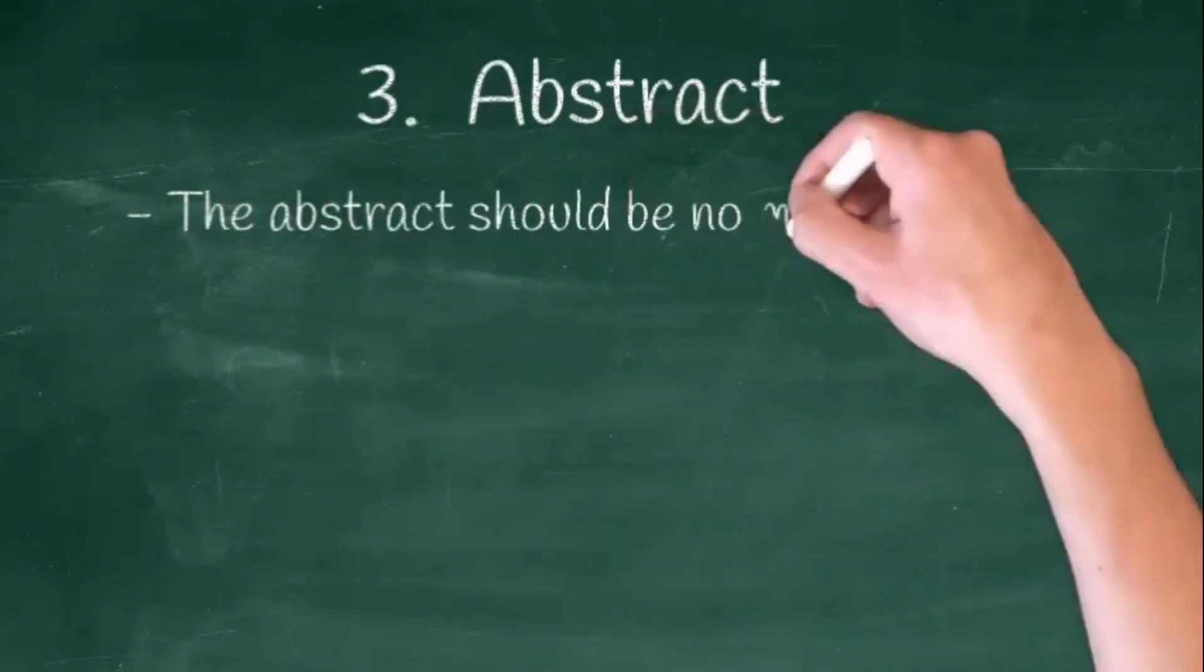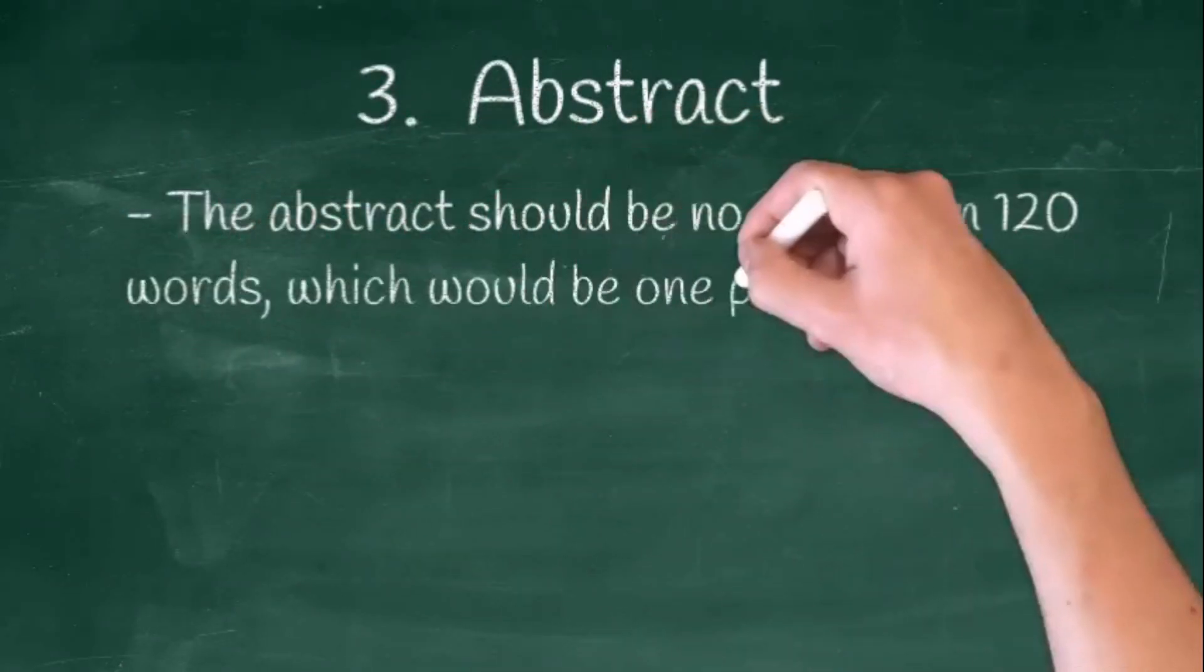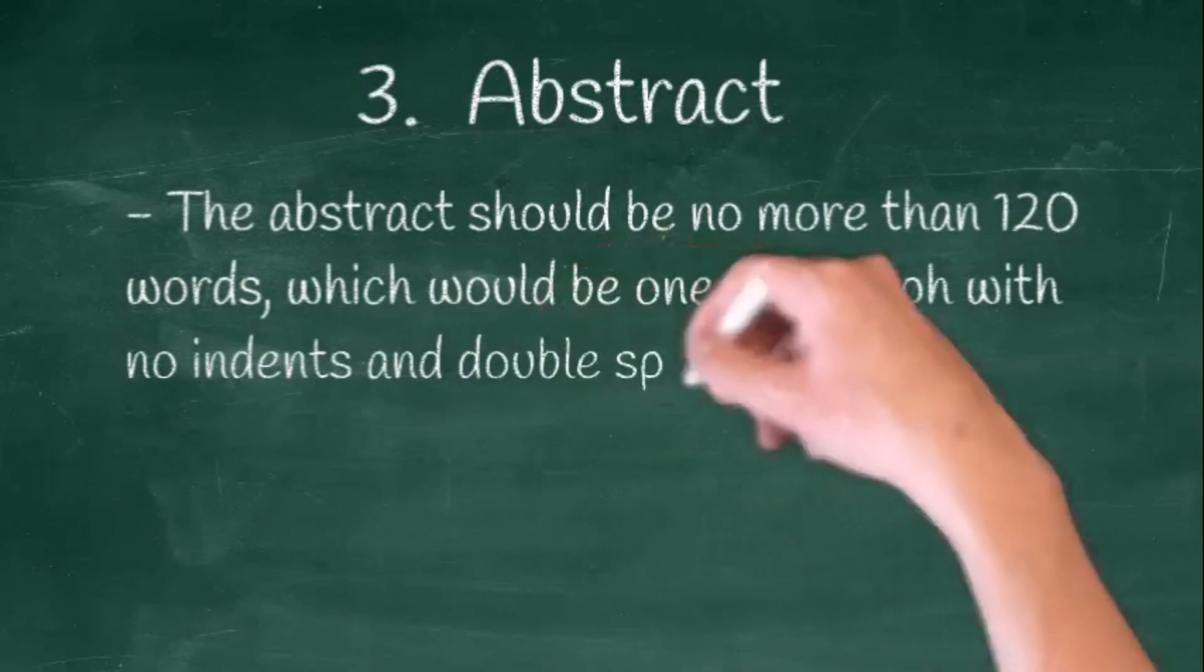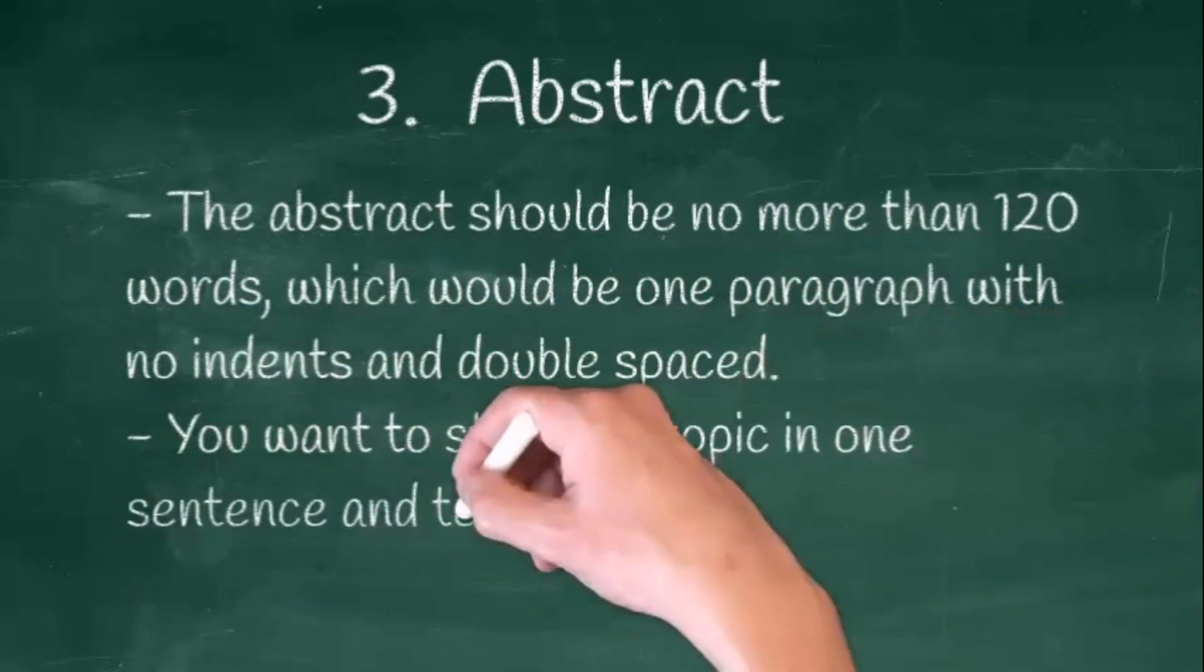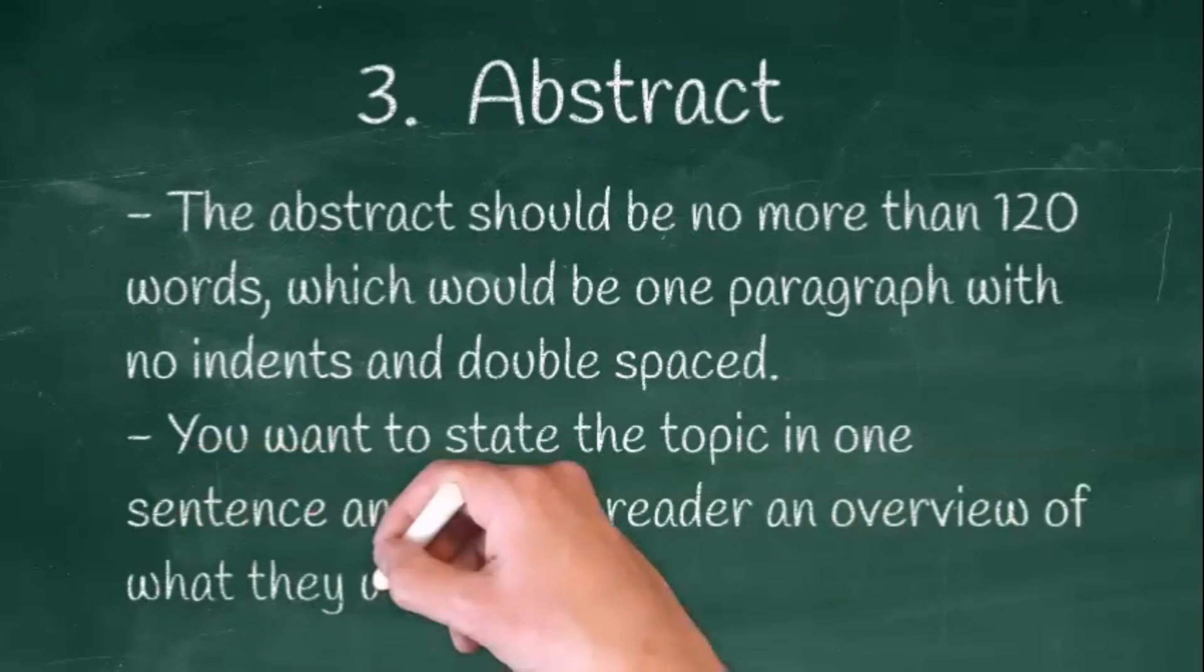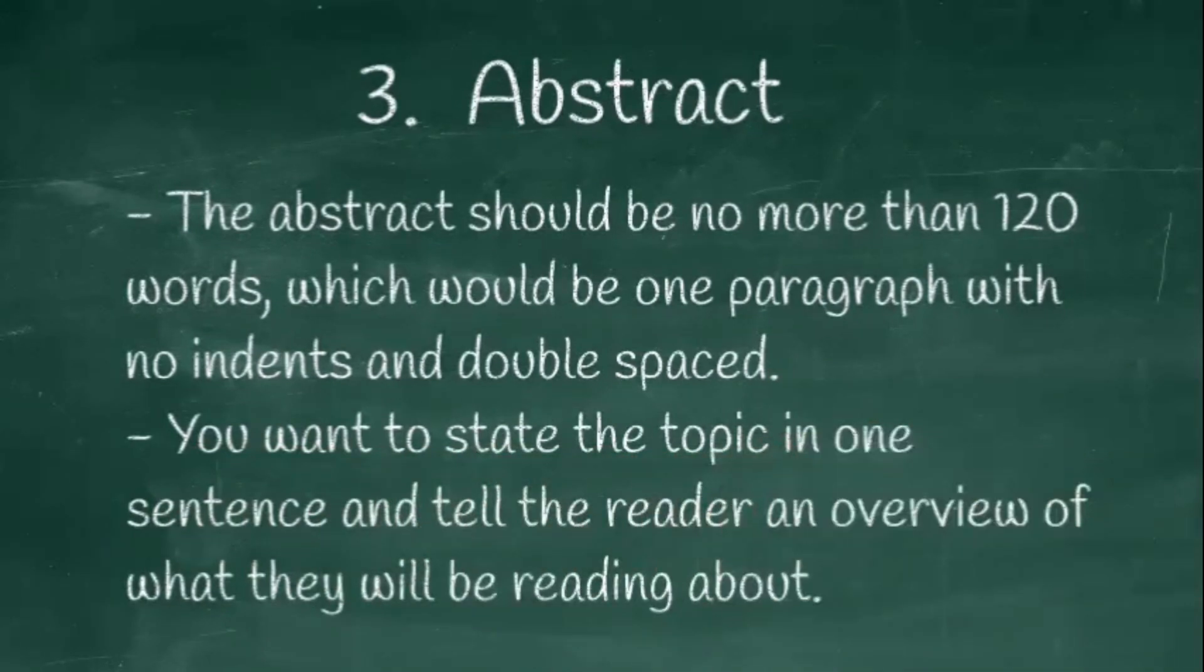Now the abstract. The abstract should be no more than 120 words, which would be one paragraph with no indents and double-spaced. You want to state the topic in one sentence and tell the reader an overview of what they will be reading about.